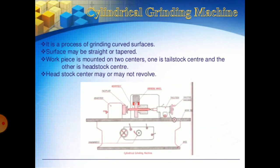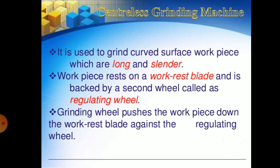Next is the cylindrical grinding machine. It is a process of grinding curved surfaces; the surface may be straight or tapered. The work piece is mounted on two centers — one is the dead stock center and the other is the head stock center. The head stock center may or may not revolve.